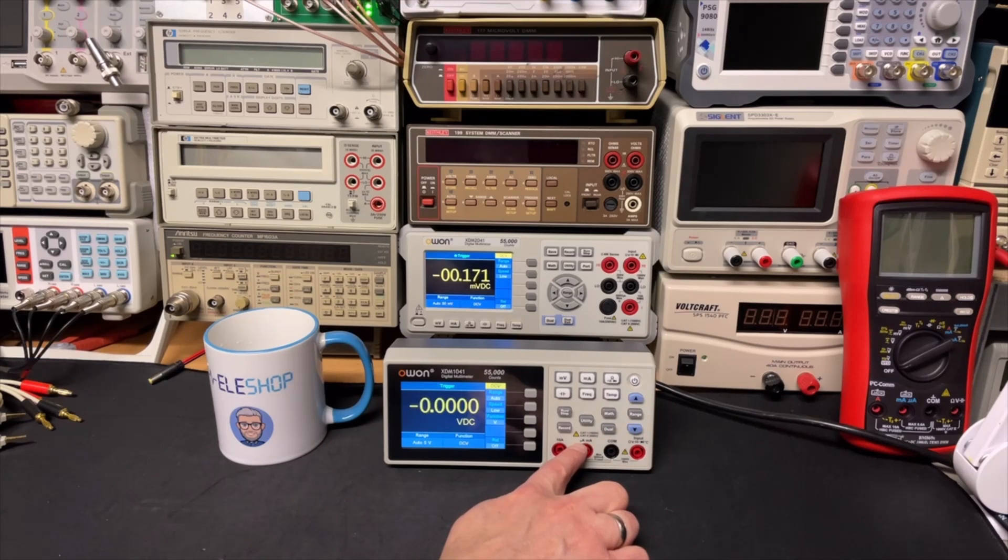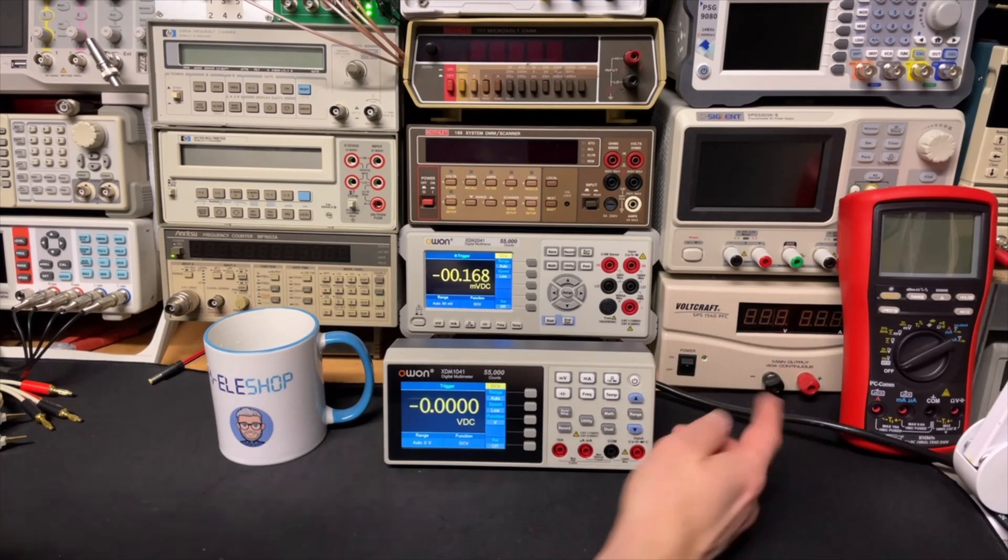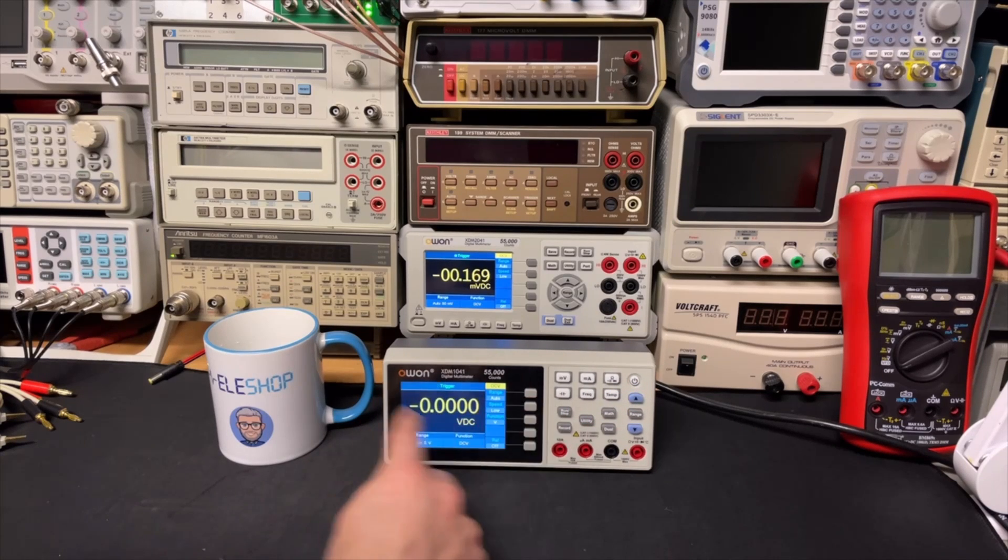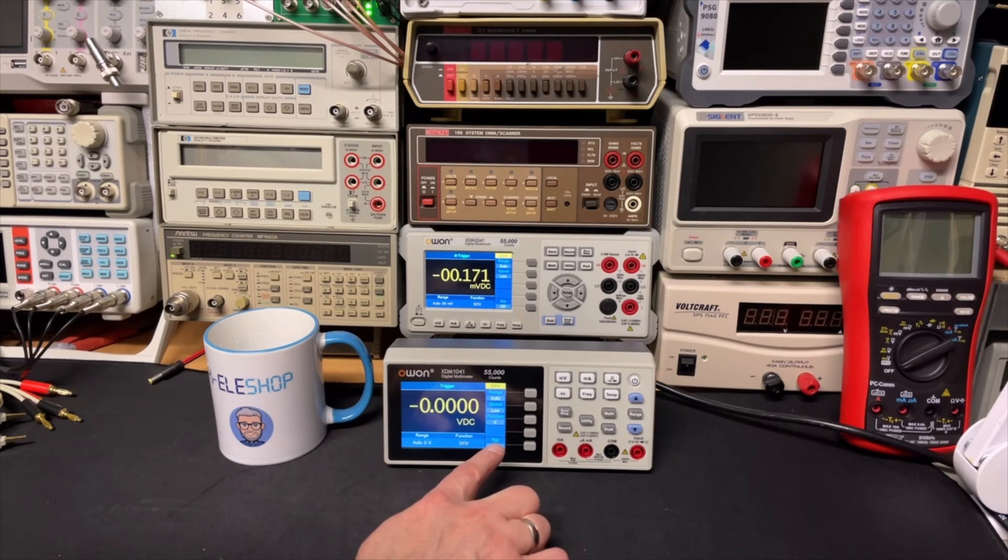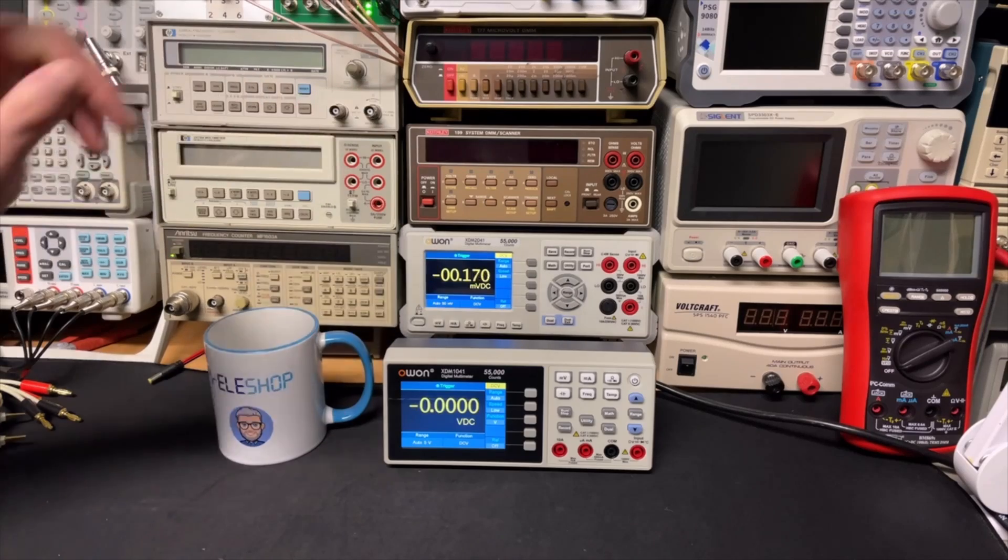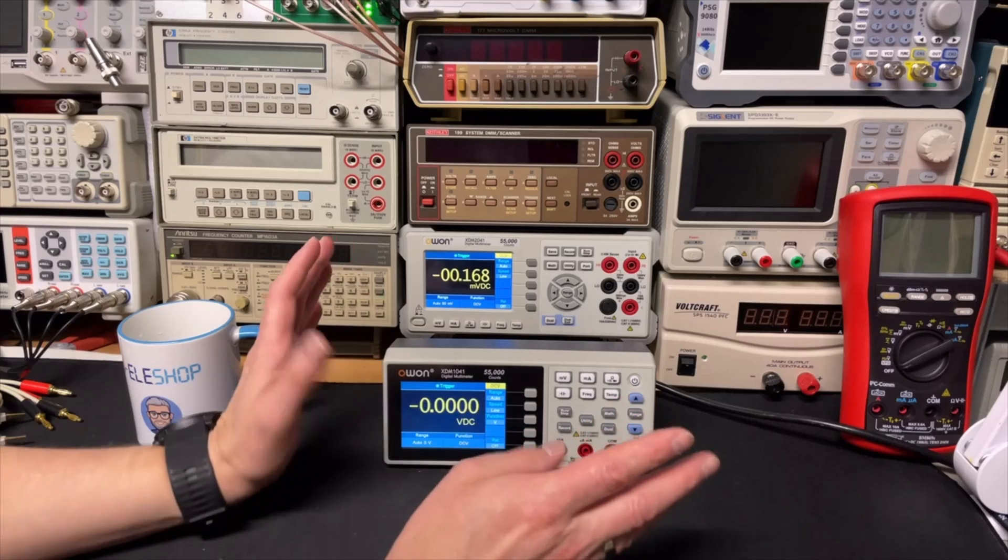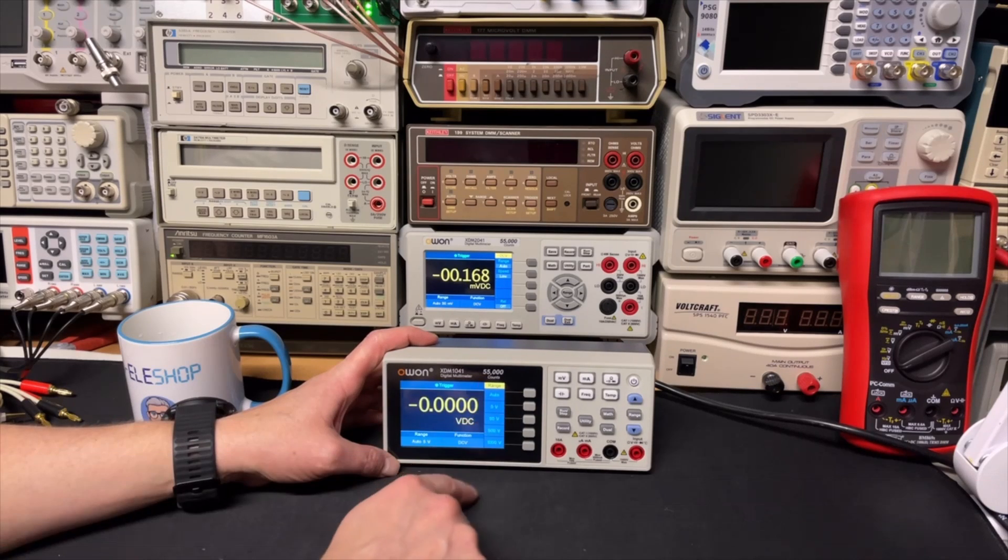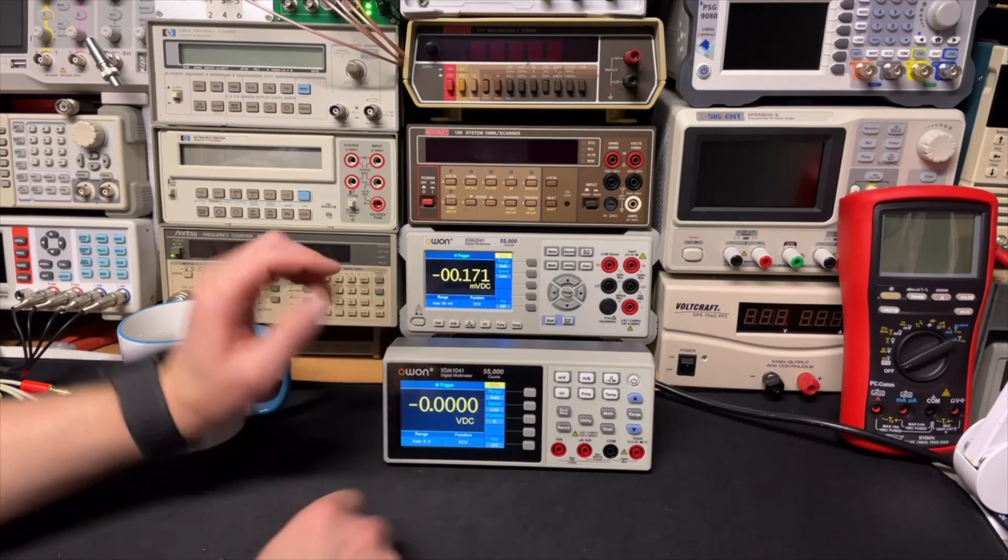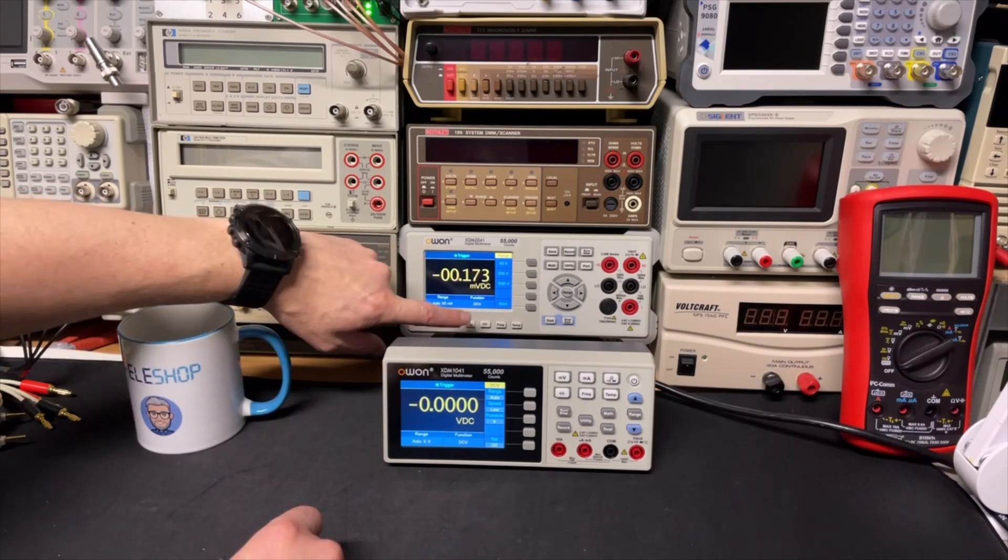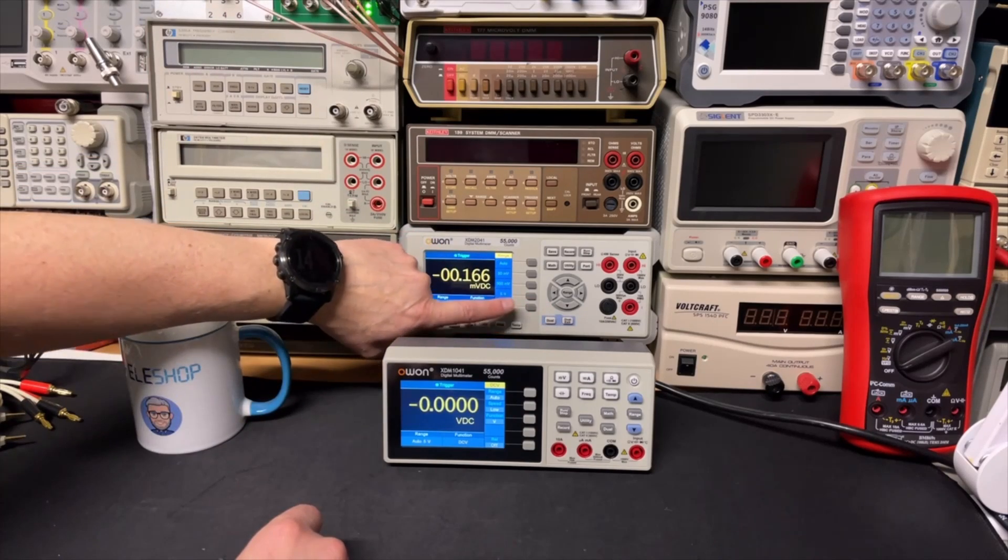I do see here an extra milliamp and microamp connection which I don't see here. This one is now in DC voltage, the default when you start it up. The lowest here seems to be five volts, while in this one the lowest is 50 millivolts, and it can really make a difference of two digits if you want to measure small voltages. We have auto range or five volts. This one goes up to a thousand volts. Here we go to the ranges: 50 millivolts, 500 millivolts, and it also goes up to a thousand, so the maximum is the same, only the lower values are not.